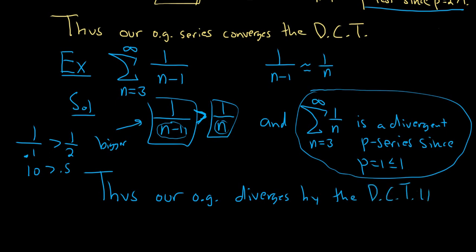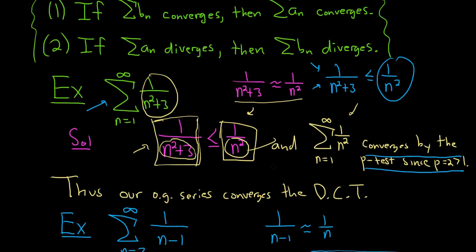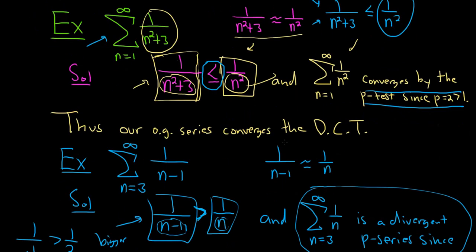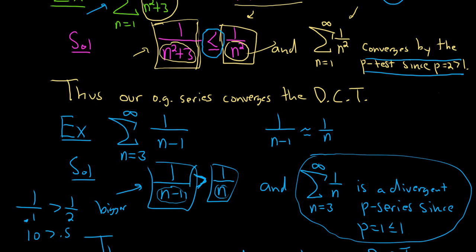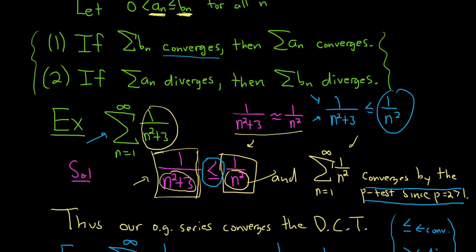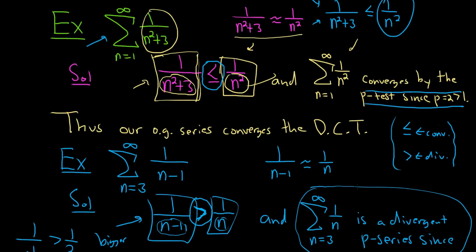The most important takeaway is how to do these problems. If you're trying to show convergence, put a less than sign. If you're trying to show divergence, put a greater than sign. I honestly just memorized this. The explanation at the beginning is really cool once you get it, but you don't have to think that hard to do the problem — it really becomes a memory thing. I hope this video has been helpful.